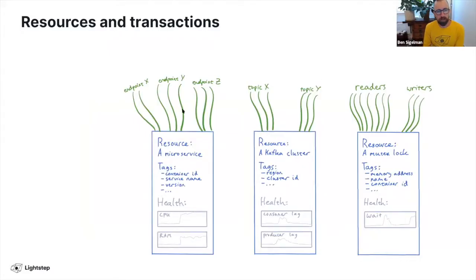We have our resources and a bunch of transactions coming in. The transactions are these little green things and the resources are these blue things. It's critical to understand that you have many, many transactions. I've drawn eight of them here, but really it's more like eight thousand or eighty thousand.